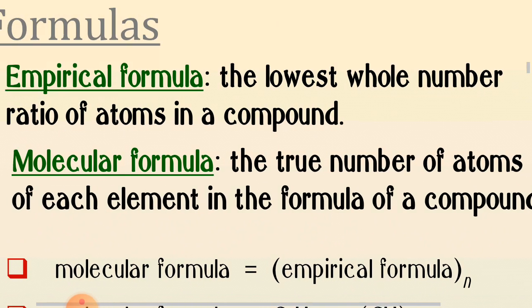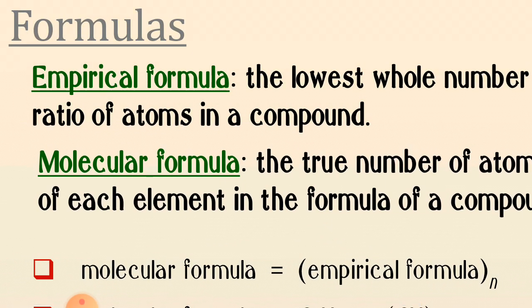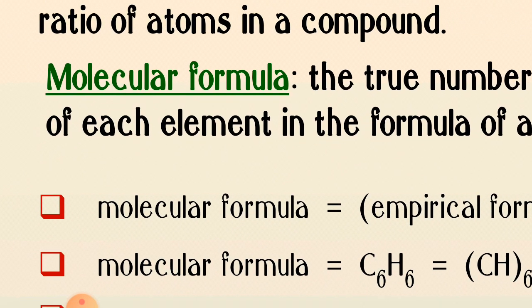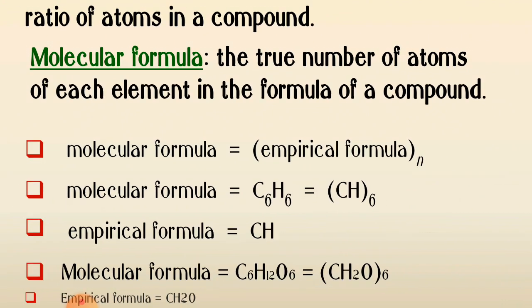Molecular formula gives us the true number of atoms of each element in the formula of a compound. The empirical formula is obtained from the molecular formula, because it's a whole number ratio — you can derive it if you know the total amount of each atom. So molecular formula tells the total number of all atoms; empirical formula tells just the whole number ratio. Molecular formula = empirical formula × subscript m.